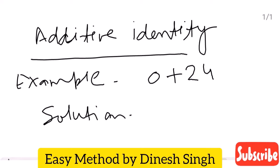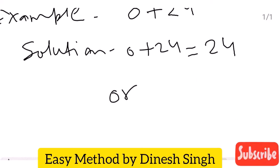Solution: 0 plus 24 is equal to 24, or 24 plus 0 is equal to 24. Next example.